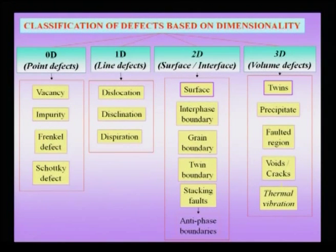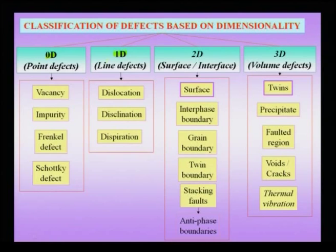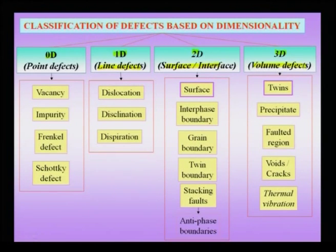The usual method of classification of defects is based on dimensionality — not in the strict geometrical sense but in a more physical sense. We can have zero-dimensional defects, otherwise called point defects; one-dimensional defects, otherwise called line defects; two-dimensional defects, which are the surface or interface defects; and three-dimensional or volume defects.